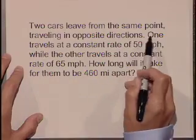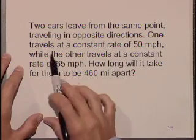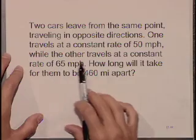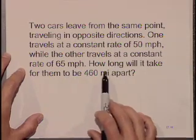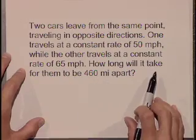Let's solve this application. Two cars leave from the same point, traveling in opposite directions. One travels at a constant rate of 50 miles per hour, while the other travels at a constant rate of 65 miles per hour. How long will it take for them to be 460 miles apart?